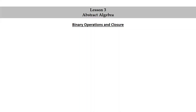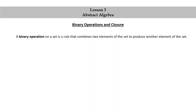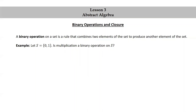Binary operations and closure. A binary operation on a set is a rule that combines two elements of the set to produce another element of the set. Let's look at an example. Let S be the set consisting of 0 and 1. Is multiplication a binary operation on S?